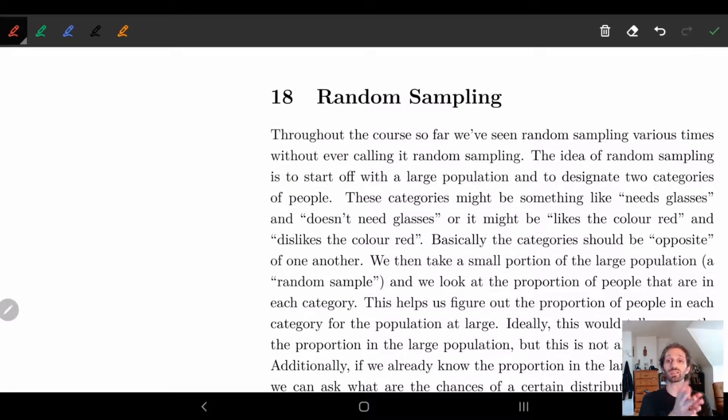So basically for random sampling you start off with some large population and you want to designate two categories of people. Either people who did something or didn't. So like someone who needs glasses or someone who doesn't need glasses, people who like the color red or don't like the color red. Basically categories should be opposites of one another. So in other words we want to have two complements, two complementary sets.